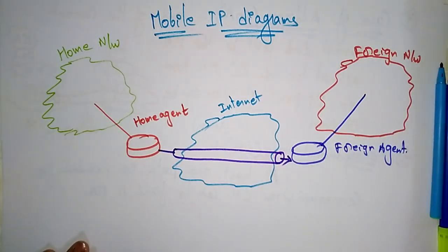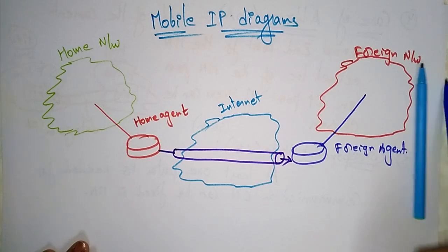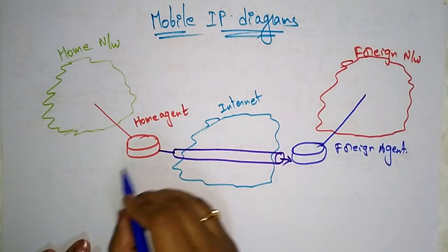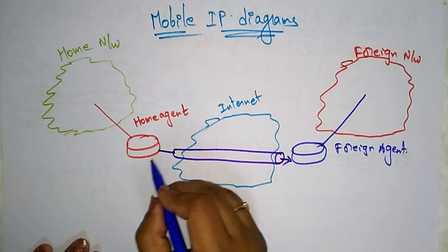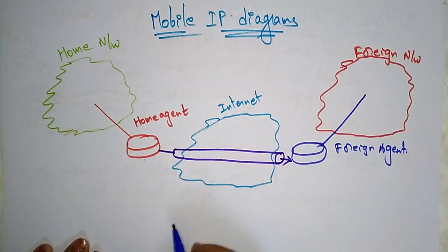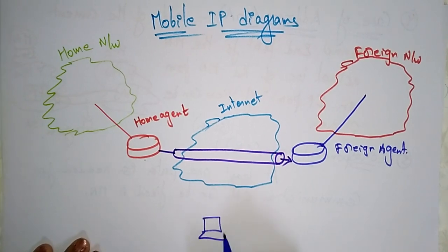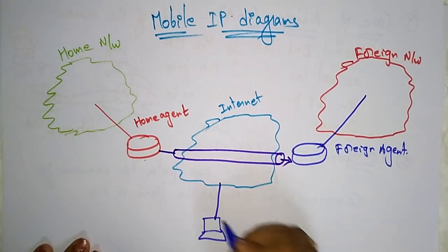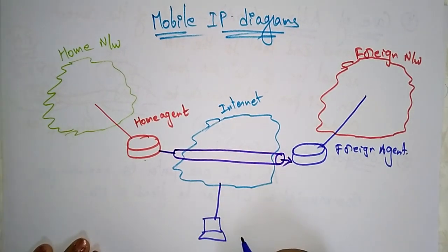In between, a correspondent node will be present. Let's take it as a server or anything else — this is the correspondent node.